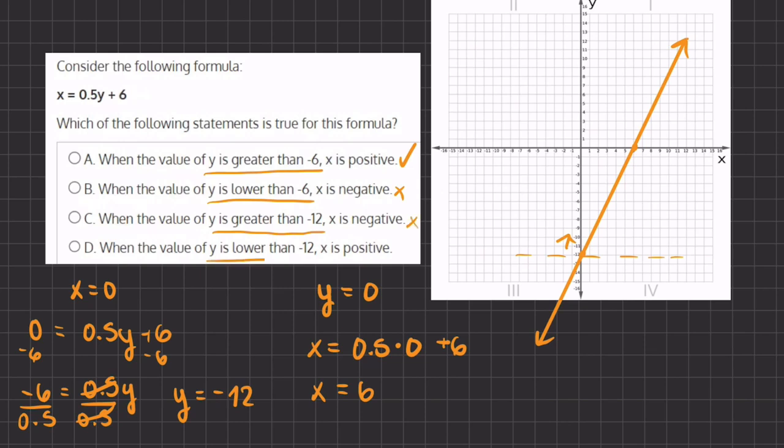And d states when the value of y is lower than negative 12, x is positive. This is the opposite. When y is lower than negative 12, all the x values are negative. Therefore, d is also incorrect. And our final answer will be a.